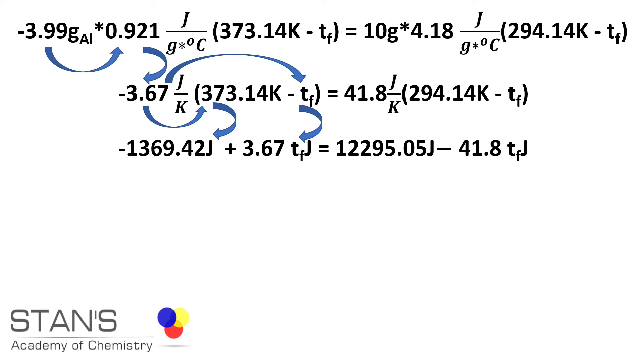All these values are for aluminum and now for water, 41.8 times 294.14 gives you 12295.05 and 41.8 times Tf gives you 41.8 Tf. We will rearrange these equations to bring the like terms together. On the left side, we are going to bring the Tf values.